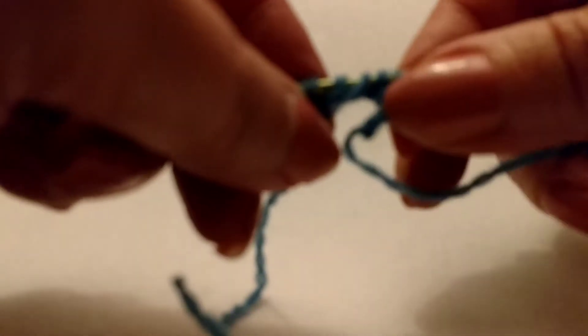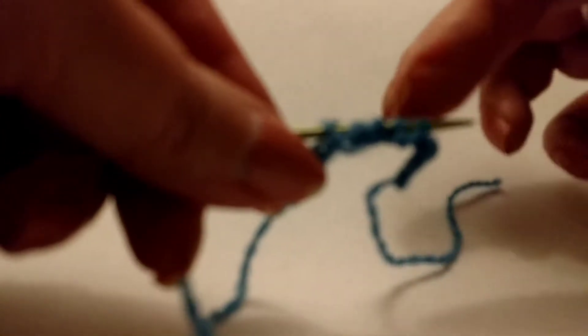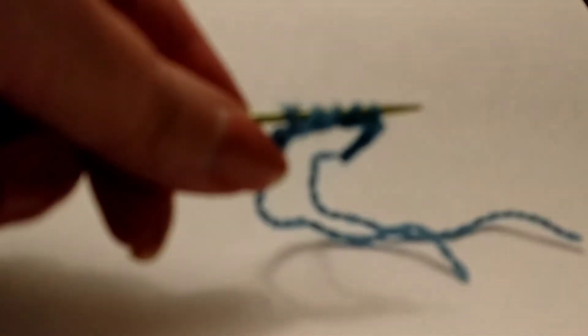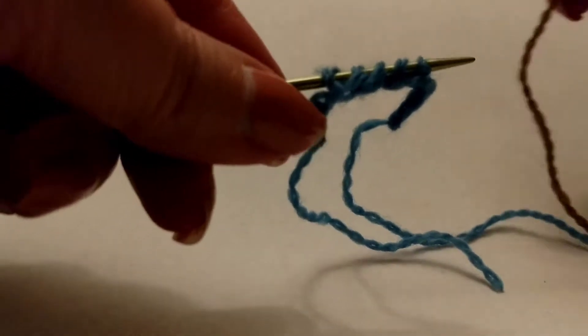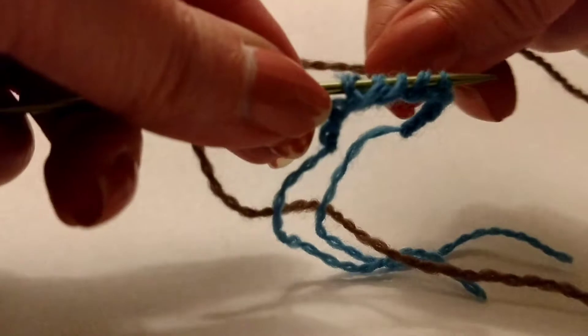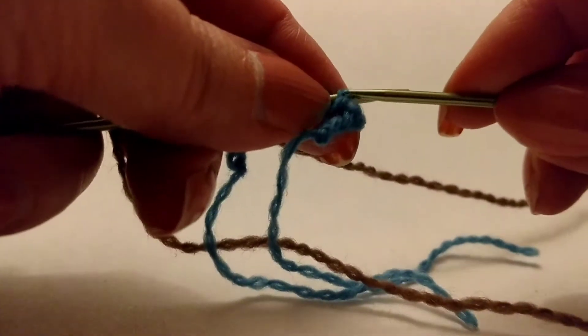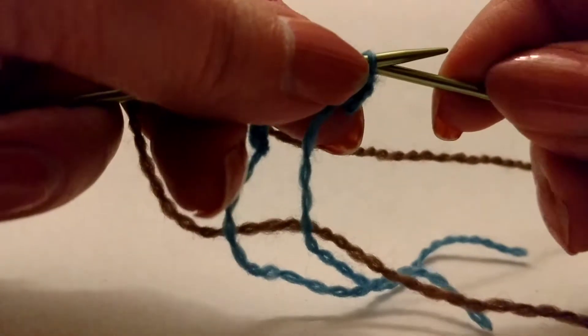When you have the amount of stitches on the needle, the amount of bumps that you need on the needle, then you're going to grab your main color yarn or your different color yarn. And you're going to act like you're going to be knitting.